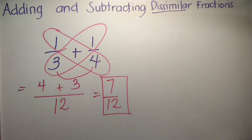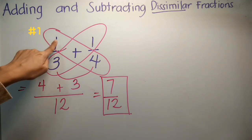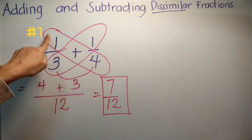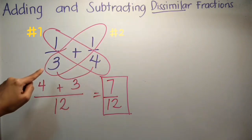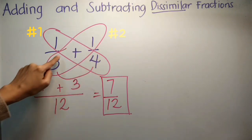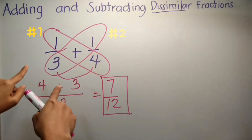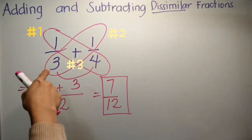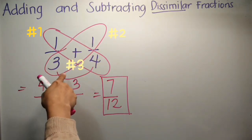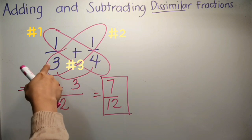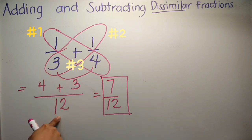So again, step 1: multiply mo tong dalawa. Step 2: i-multiply mo tong dalawa. And then step 3: yung kanilang mga denominators, i-multiply mo para dito. Okay?